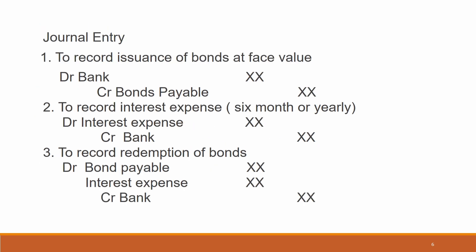Normally, we have to record journal entries for bond payable. Number one, to record issuance of bonds at face value: debit bank, credit bonds payable.